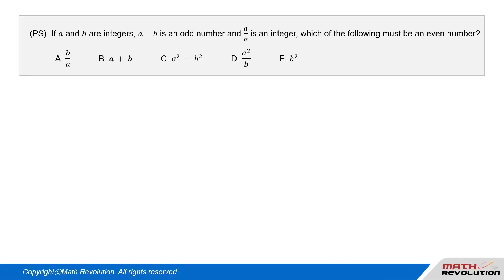Question. If A and B are integers, A minus B is an odd number, and A over B is an integer. Which of the following must be an even number?